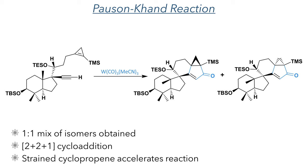With both the alkene and the alkyne now installed, the authors turned their attention to the Pauson-Khand reaction, a key step in this synthesis. After extensive screening of catalysts and revision of their initial intended intermediate, the authors arrived at using tris(acetonitrile)tricarbonyl tungsten as the catalyst. This reacts with the alkene and the alkyne of the molecule, inserts a carbonyl centre, and overall forms a five-membered enone ring. The cyclopropene moiety was essential to the success of this reaction, as the high strain present within this ring accelerates the reaction and drives it forward.